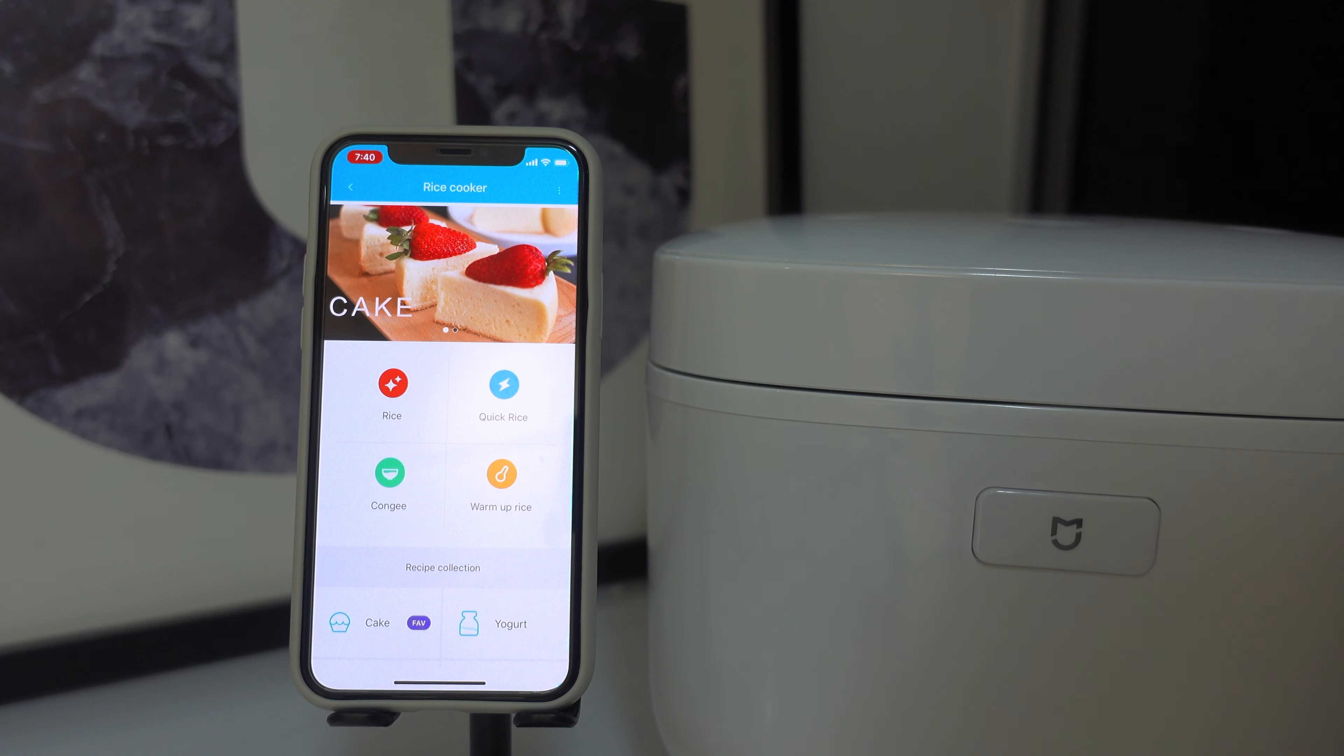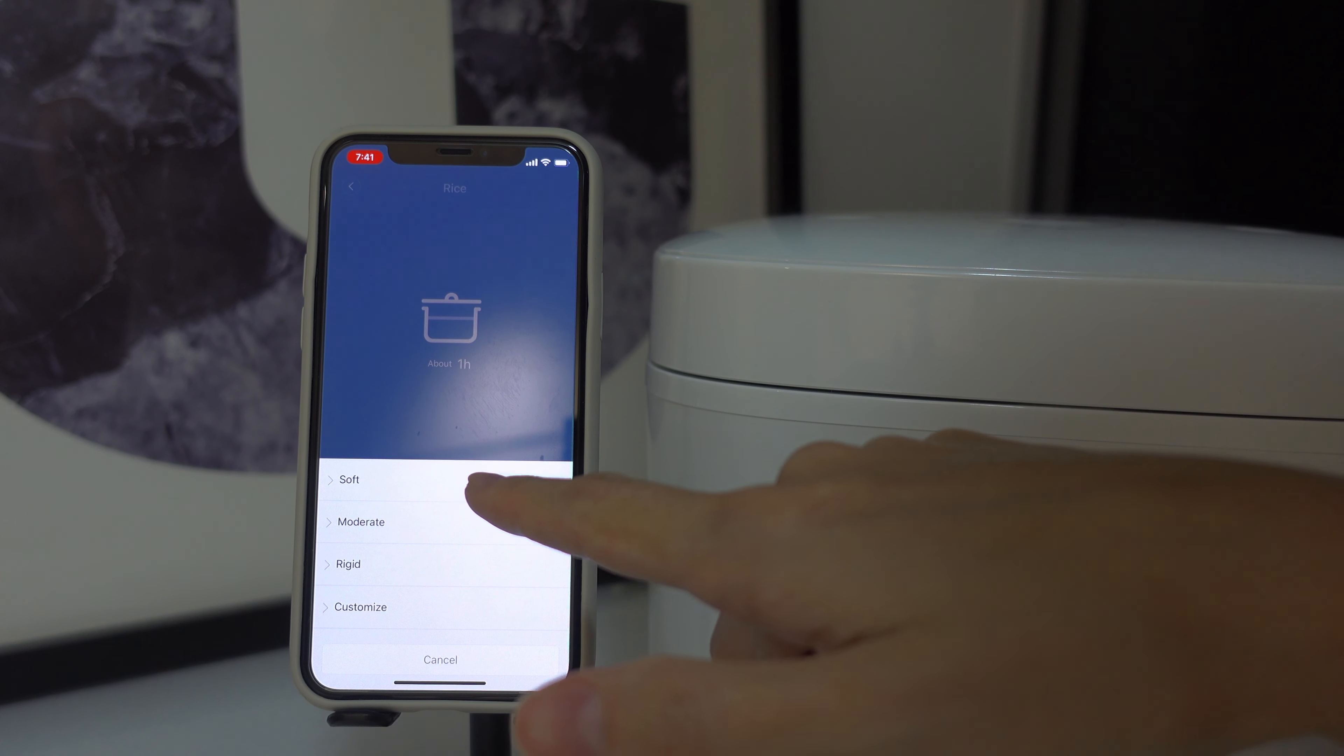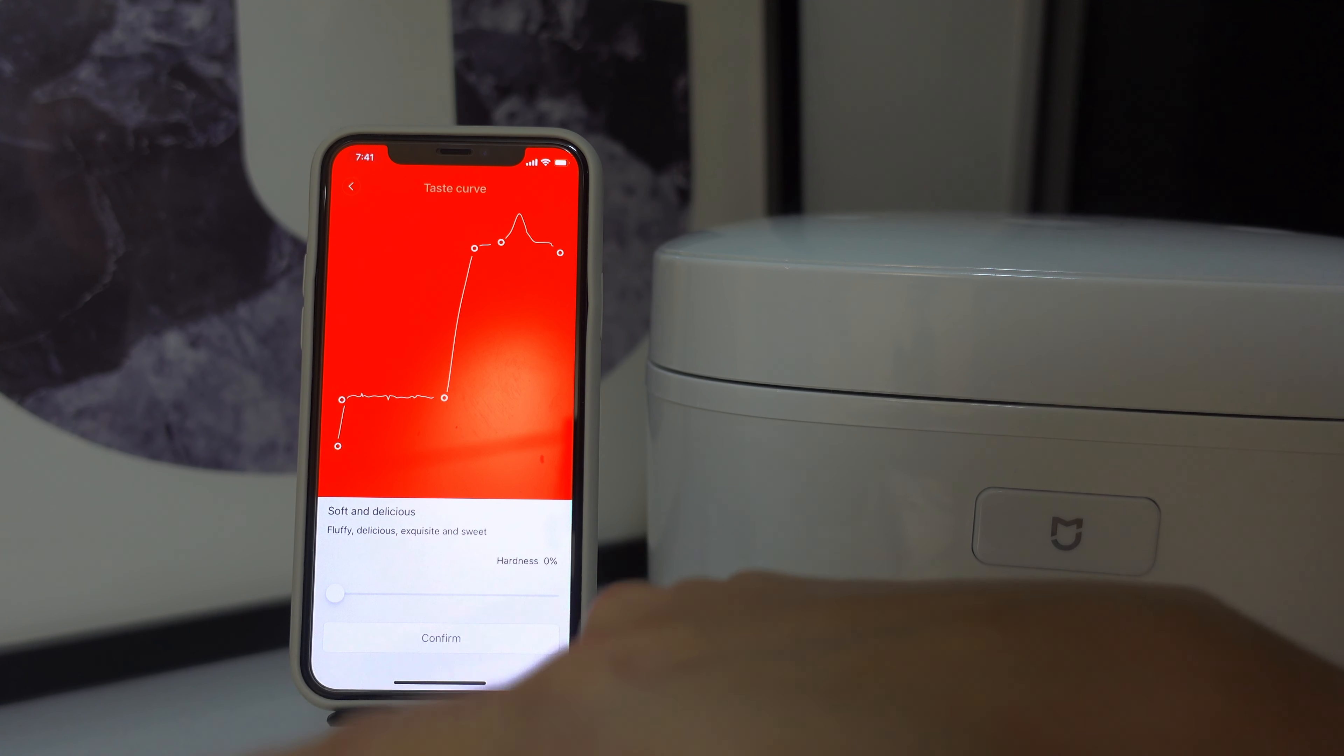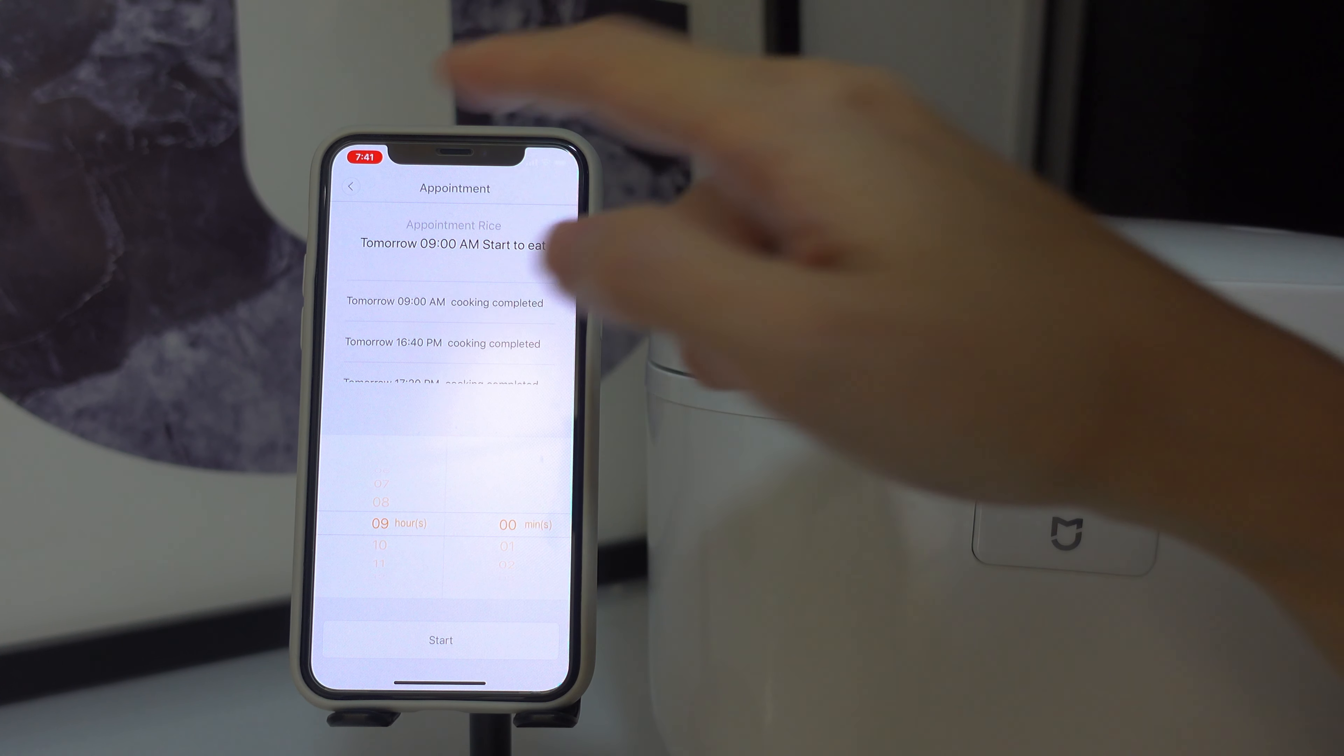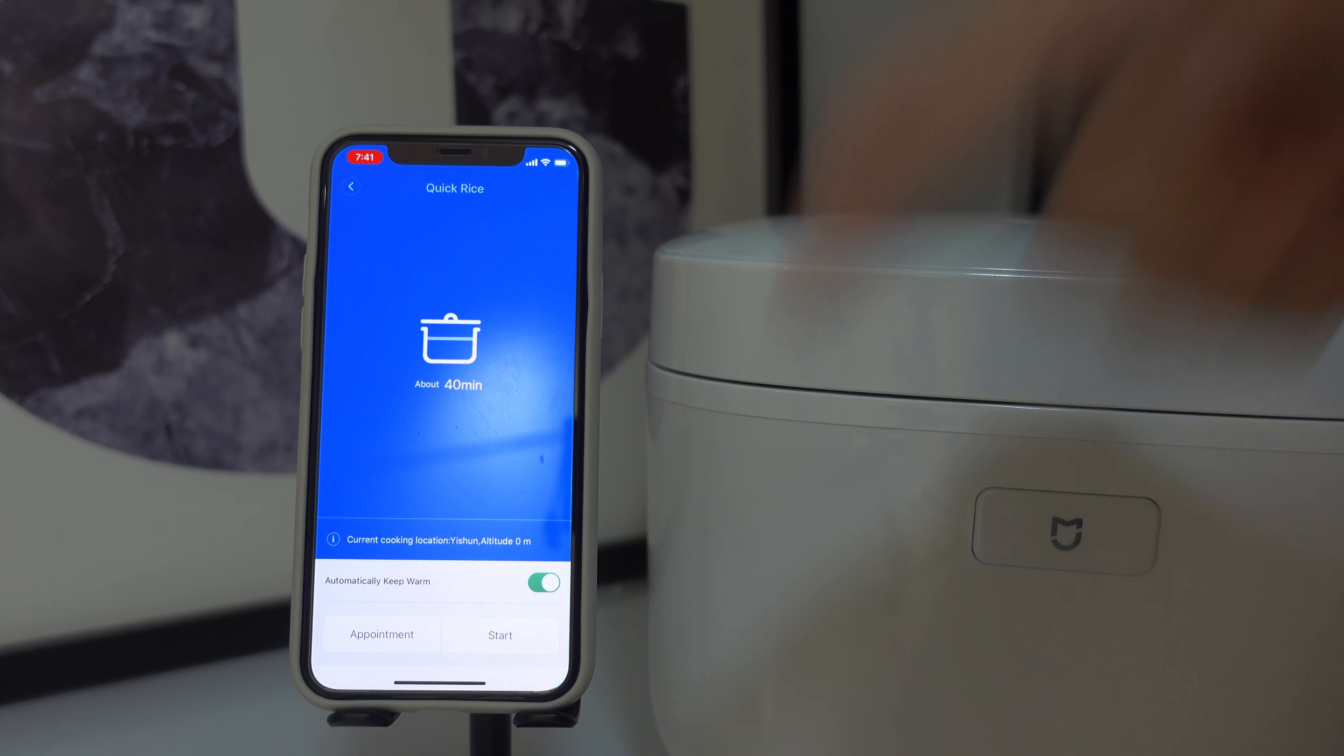I just wanted to show you what's inside this app. You have the four functions that are similar to the one on the rice cooker. So inside the rice, you have the option to change the taste curve. For example, you want it to be soft, moderate, rigid, or you can customize. You can customize the hardness 80%, 0%, and you can set the timing that you want to start eating so that it will be ready for you.